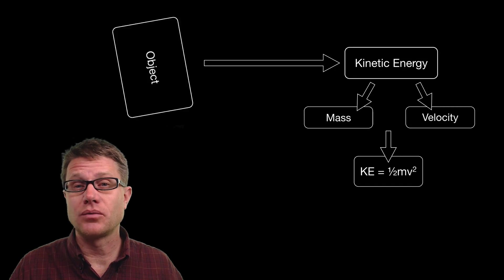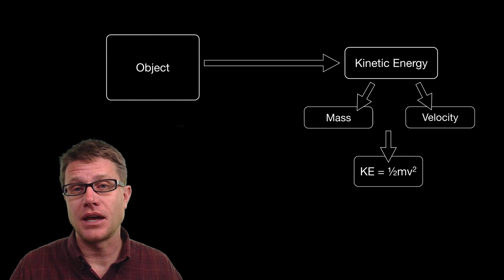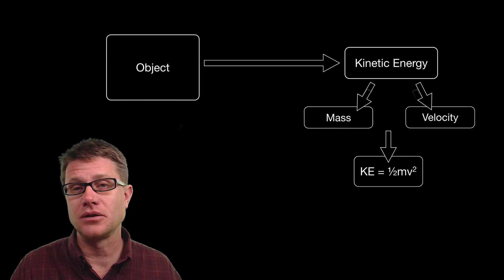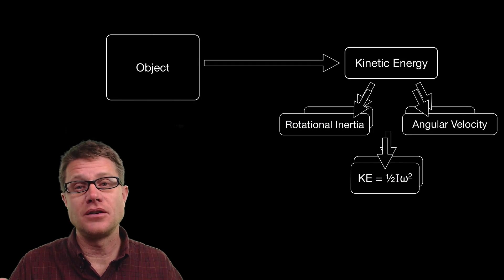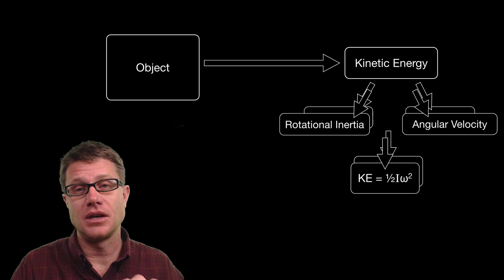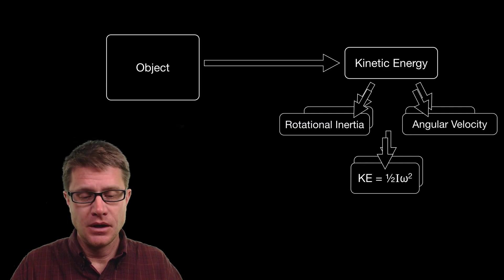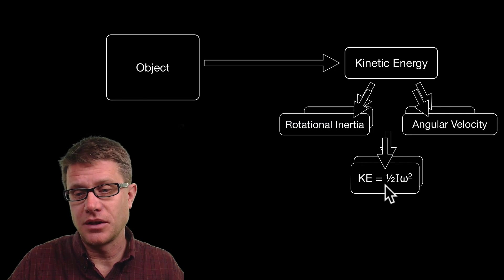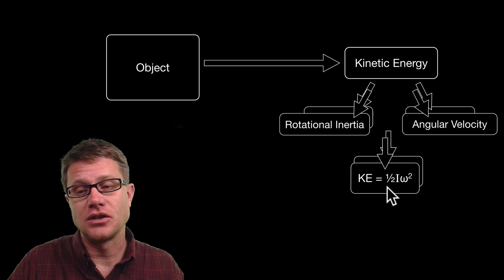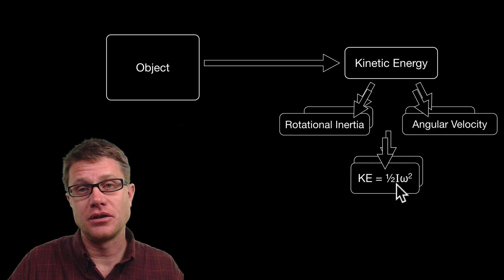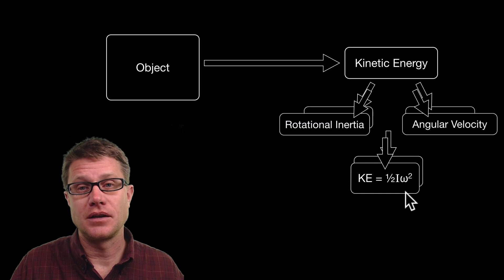Now that object could also be rotating. And if it is rotating like that it still has rotational kinetic energy. And instead of using mass and velocity we are using its moment of inertia or rotational inertia instead of mass. And then we are using its angular velocity. You can see the equation is essentially going to be the same thing. Now kinetic energy is one half i omega squared. Where i is rotational inertia and omega is going to be the angular velocity.